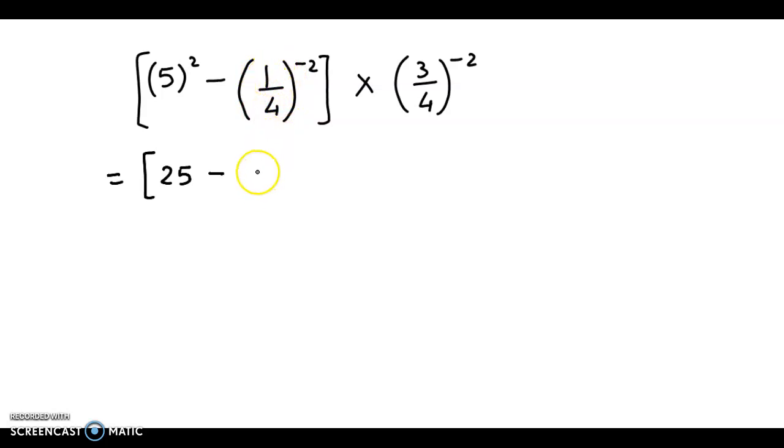Now here we take the reciprocal so this becomes 4 square into, here again we take the reciprocal so this becomes 4 by 3 the whole square.